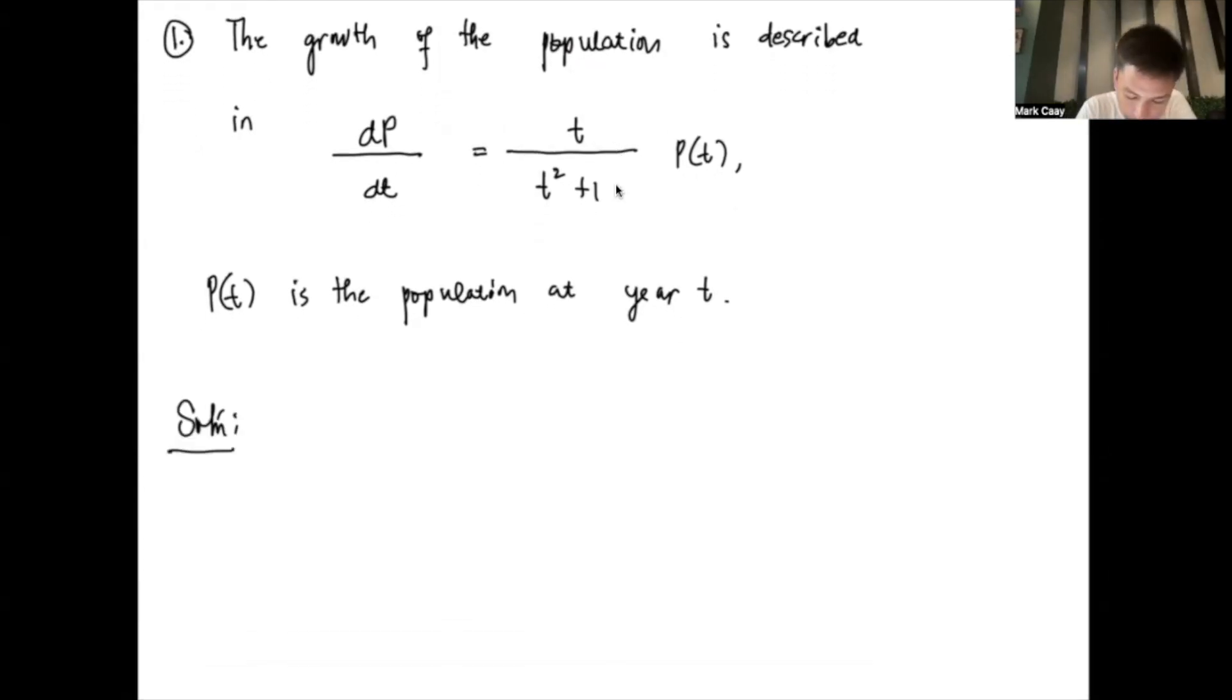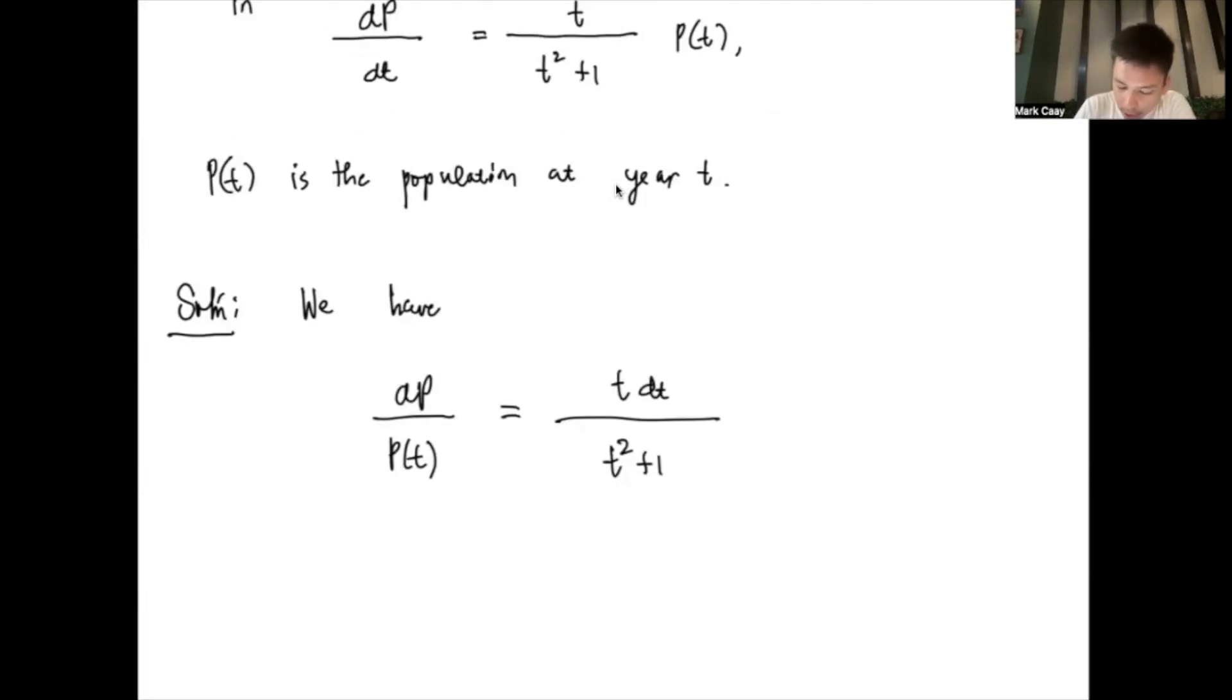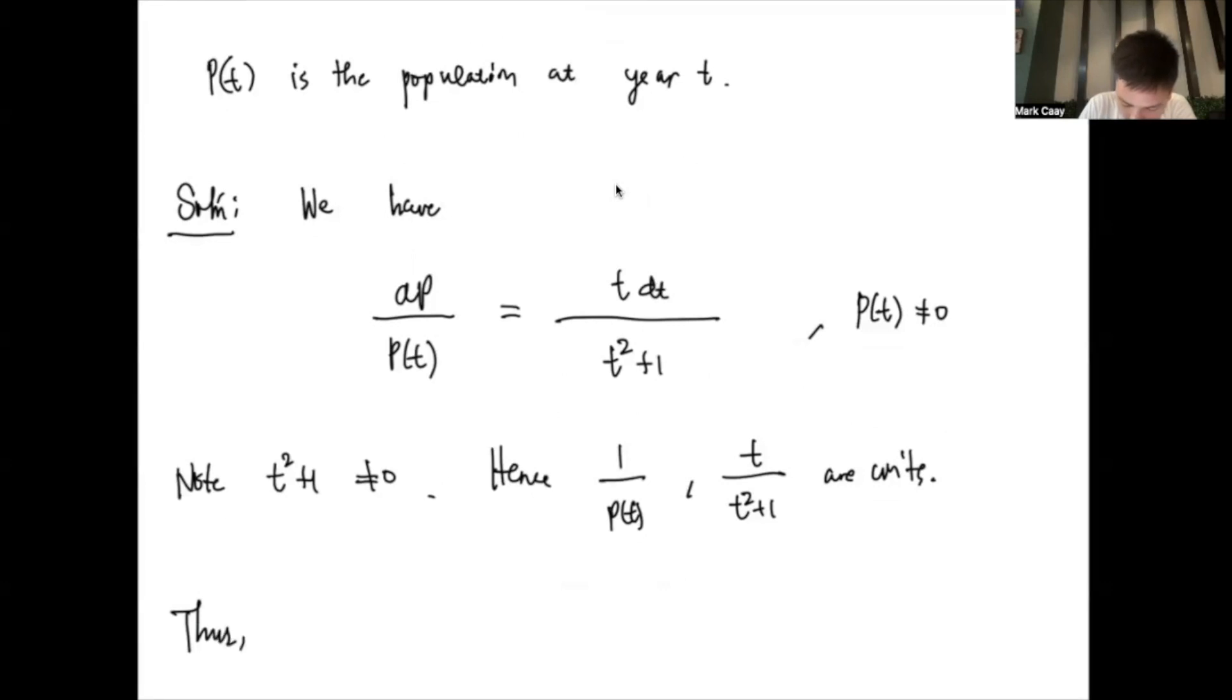So, how do we solve this differential equation? Remember that this differential equation, I can separate in this form. We have dp over p(t) equals t dt over t squared plus 1. Now, because we're talking about the population, we assume here that p(t) is not 0. Otherwise, there's no point of talking about the population rate. Also, we are pretty sure that t squared plus 1 is not 0, since it's squared. And in fact, t here is a year. Hence, our 1 over p(t) and t over t squared plus 1 are continuous. So, therefore, the DE is separable.